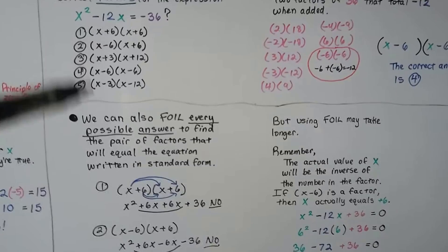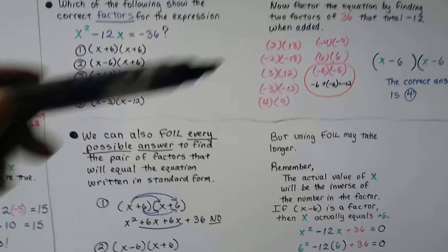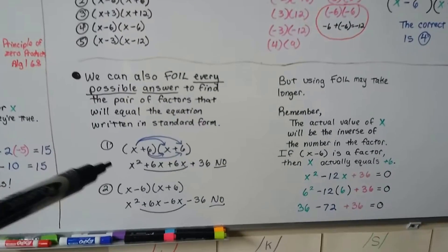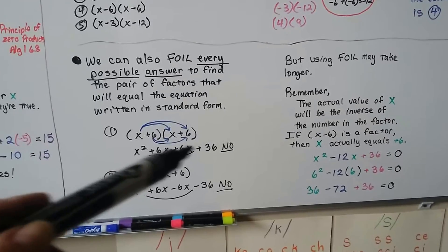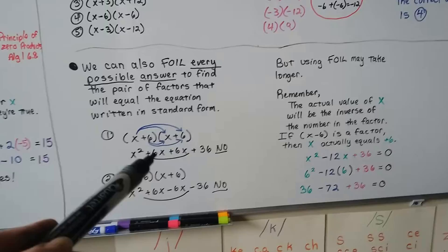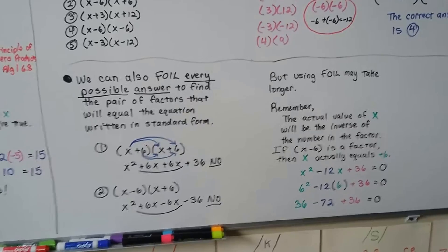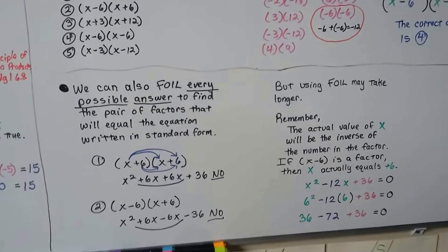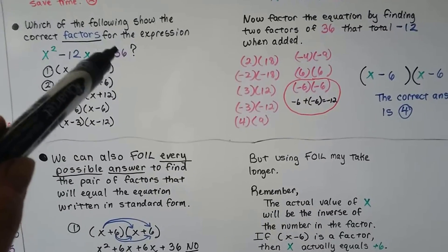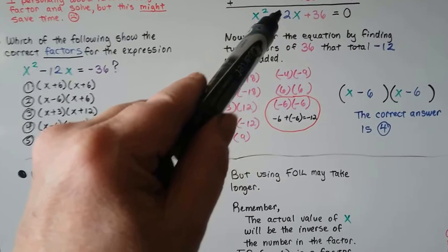Now, your other choice to find the correct answer here is FOIL every single possible answer to find the one that looks like this, x squared minus 12x plus 36 when it's in standard form. So, you would have to FOIL every single possible answer and say, nope, it wasn't 1, FOIL it, nope, it wasn't 2. This gave us a positive 12 instead of negative 12. This gave us a zero pair. That wasn't it. So, using FOIL may take longer. It'll still work, but it may take longer. So, if you're really lost and confused, go ahead and FOIL it. But, know in your heart that you can just find two numbers. Once it's set to equal zero, you can find two numbers that equal this one multiplied together that equal this when added.